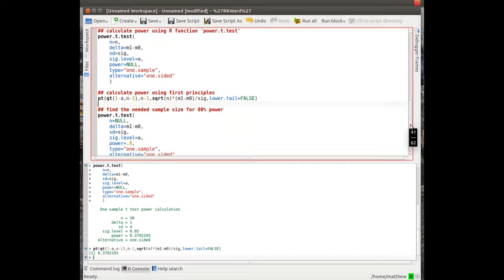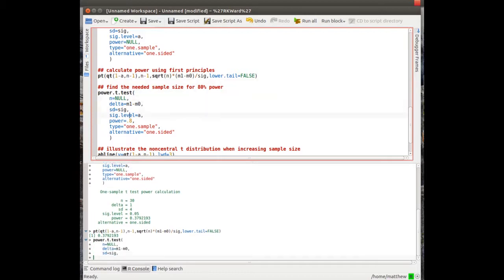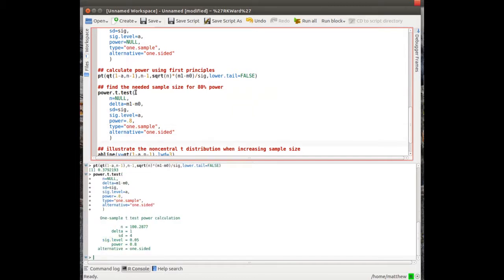But we want to know what sample size we need to achieve 80% power. So we'll use the same power.t.test and leave n blank. We'll put the same delta in, 4 minus 3, σ is 4, α is 0.05, and we want a power of 80%, or 0.8. This tells us the sample size needed to achieve that power, and we need a sample size of 101.